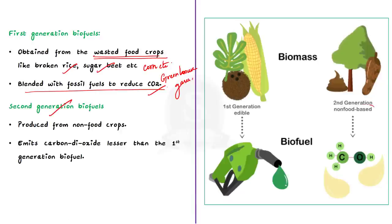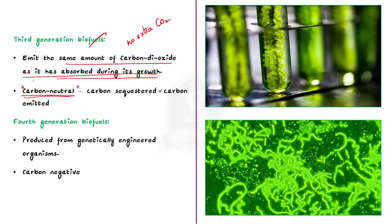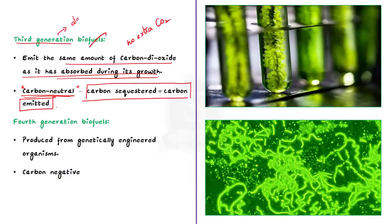Third generation biofuels emit the same amount of carbon dioxide as they absorbed during their growth, so no extra carbon dioxide is emitted into the atmosphere — making third generation biofuels carbon neutral. One crucial fact: third generation biofuels derived from algal biomass have been considered as the best alternative bio-resource that avoids the disadvantages of first and second generation biofuels.